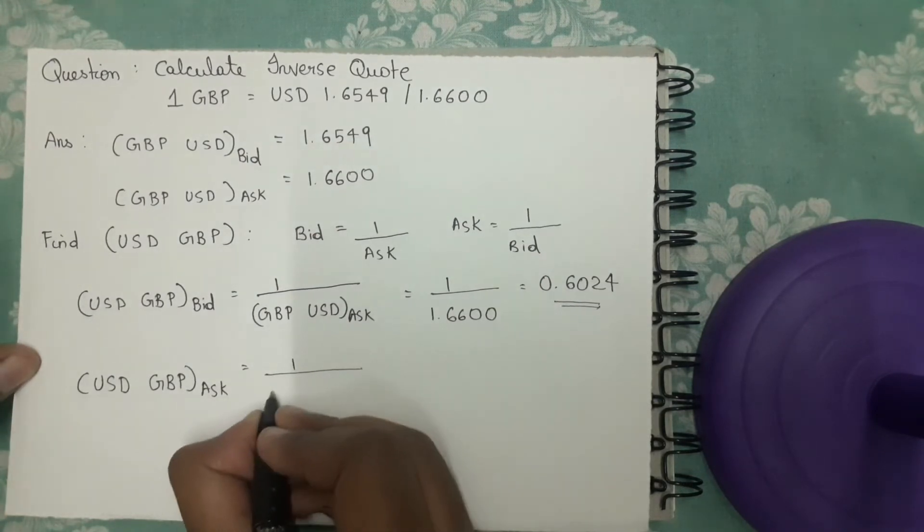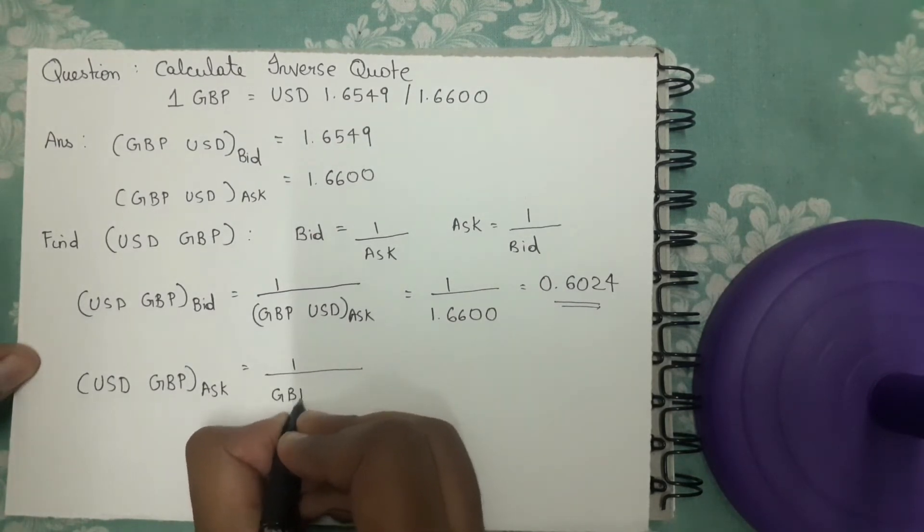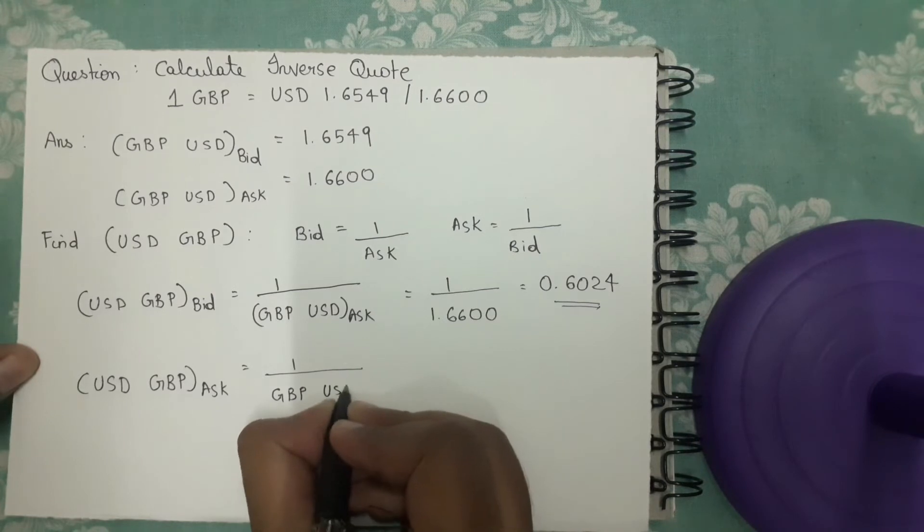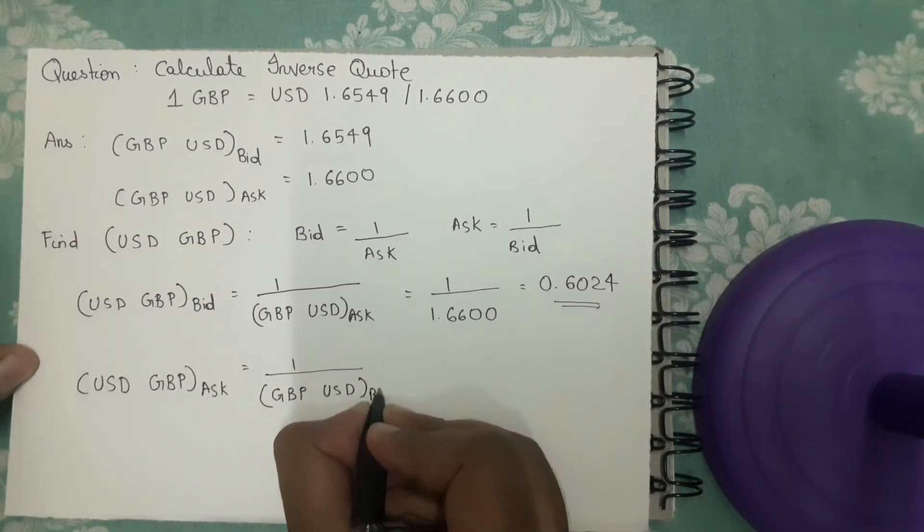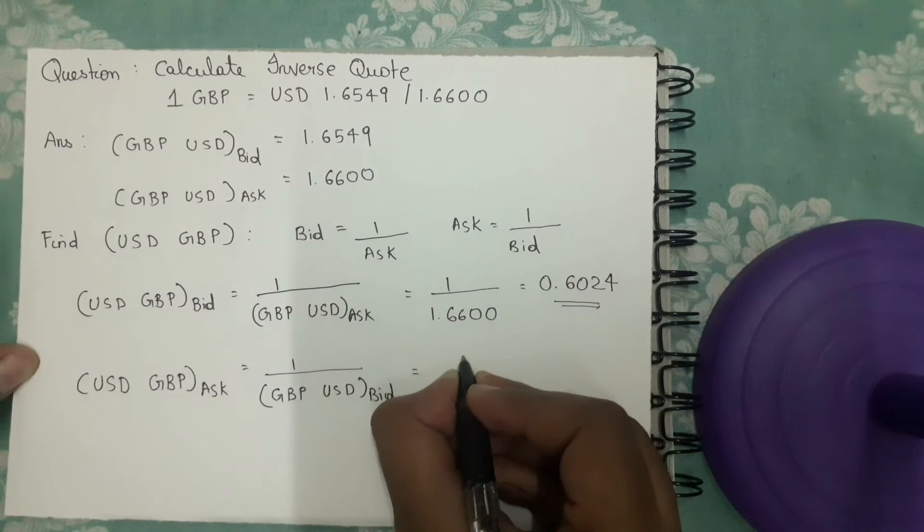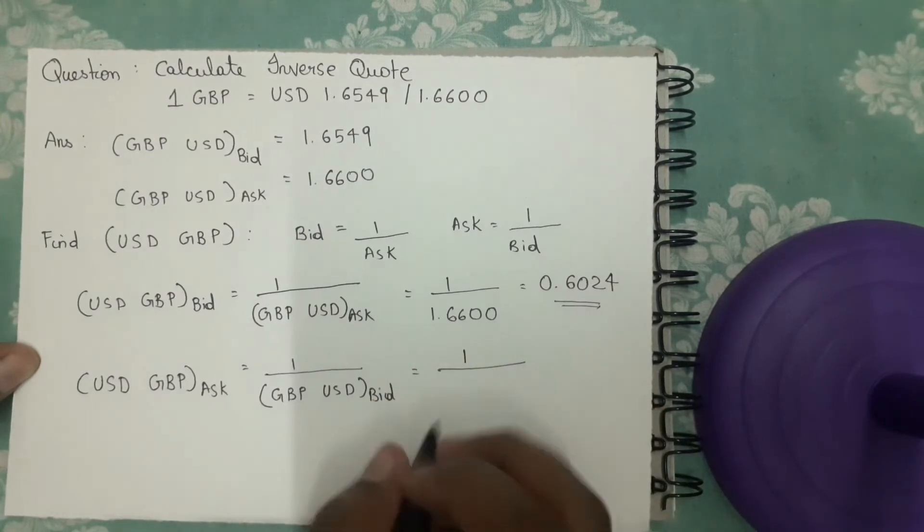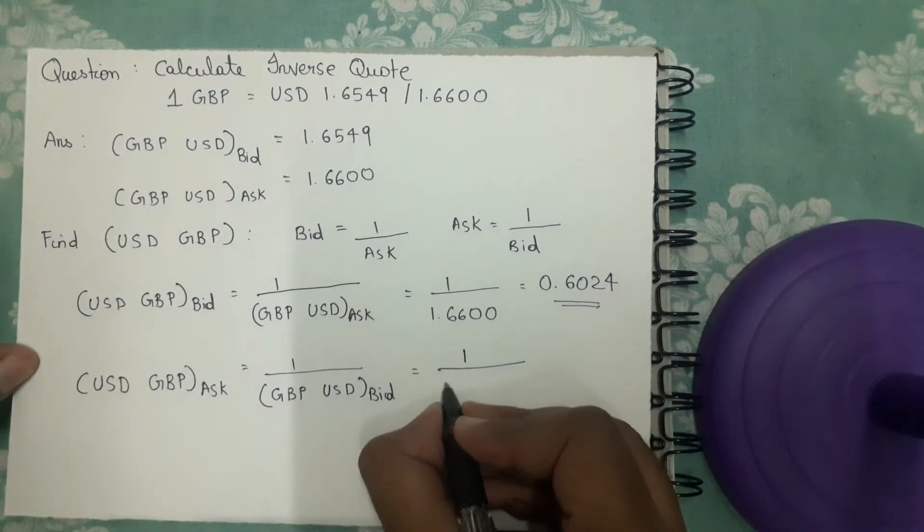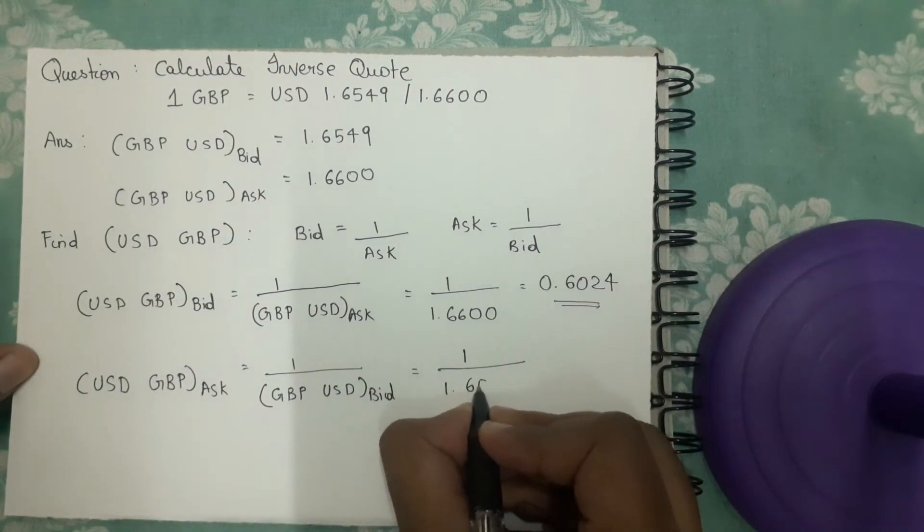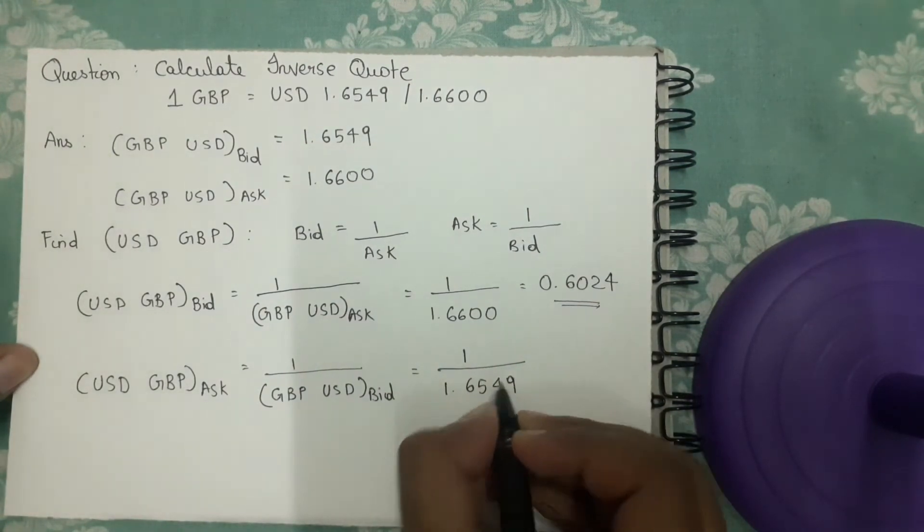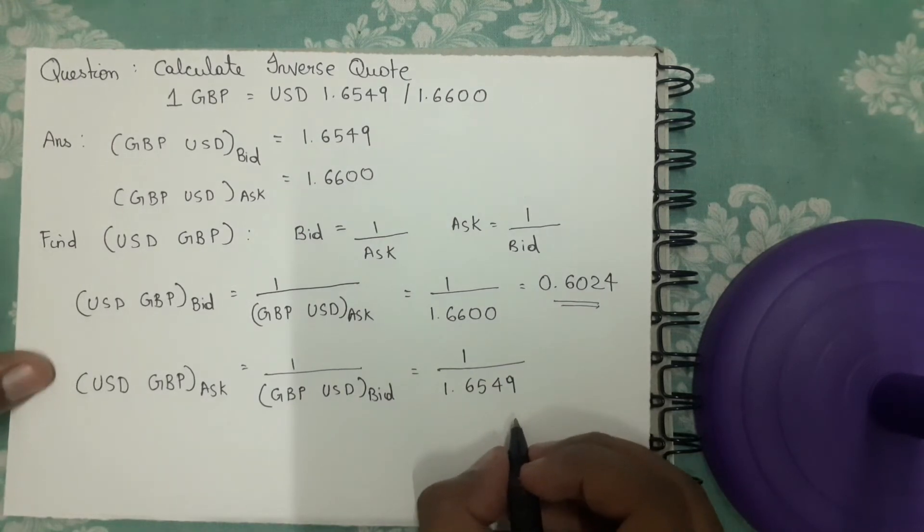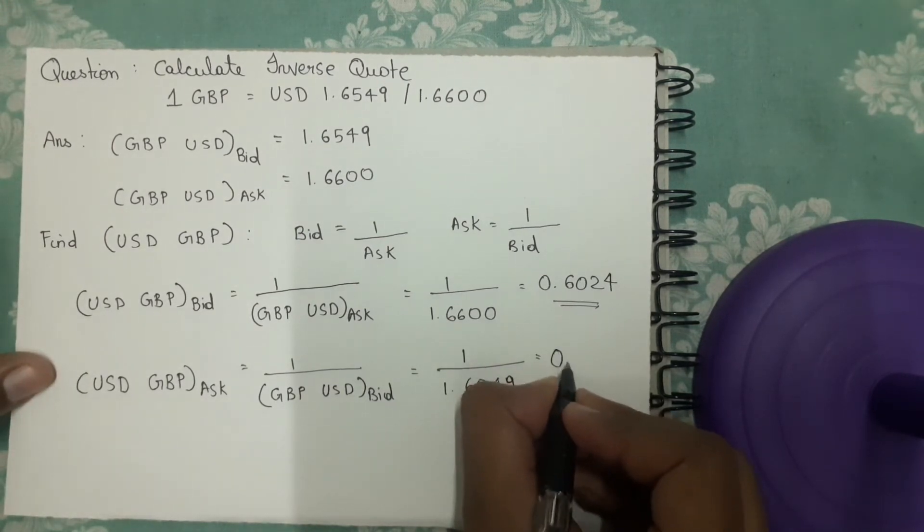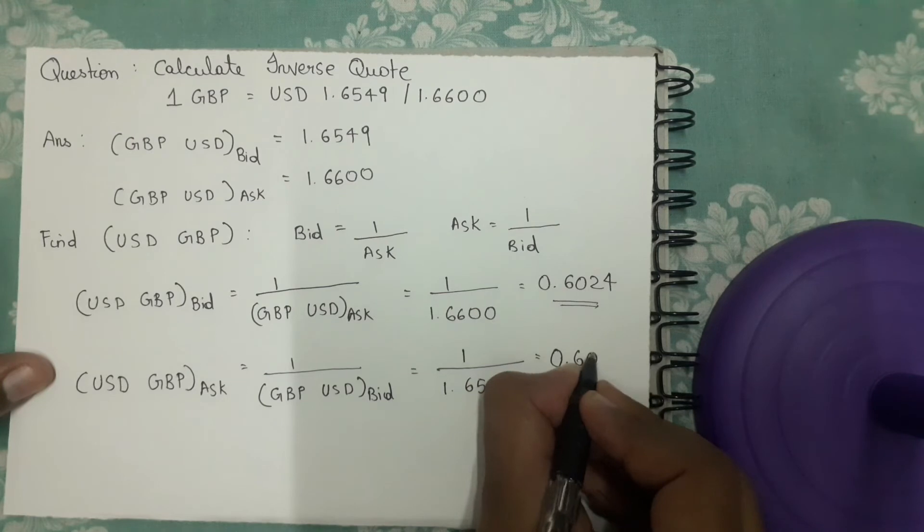So 1 by GBP/USD bid rate, which is 1 by 1.6549, and the value would be equal to 0.6043.